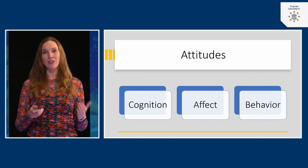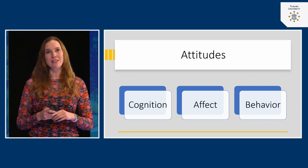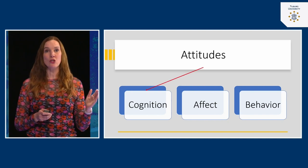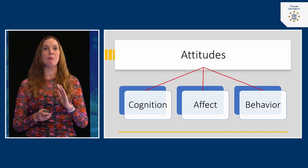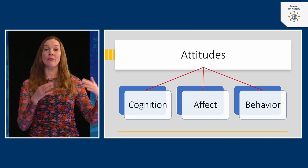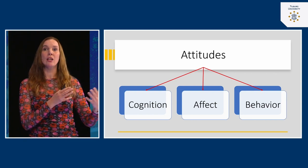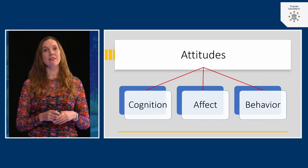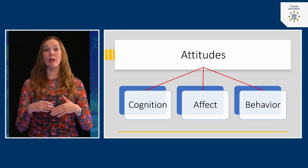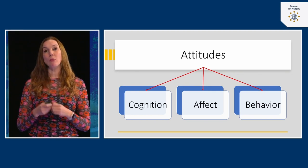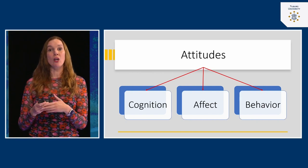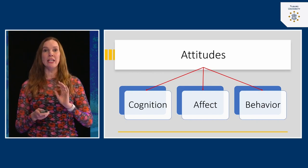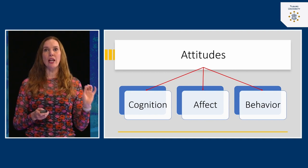Prejudice is oftentimes negative. Prejudice is an attitude, and we extensively talked about attitudes in lecture seven. An attitude actually consists of three different components: cognition, affect, and behavior. With an attitude, you have a cognitive part — basically the knowledge you have about a specific subject — you have a feeling about it, and you also show behavior that is oftentimes either approaching or avoiding the attitude object.